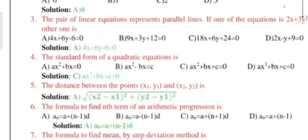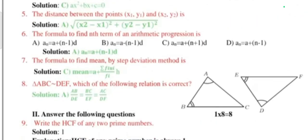Question 4: The standard form of a quadratic equation is answer C. Question 5: The distance between the points (x1, y1) and (x2, y2) is answer A. Question 6: The formula to find the nth term of arithmetic progression is answer A, an = a + (n-1)d. Question 7: The formula to find mean by step deviation method is mean = a + (Σfu / Σf) × h. Question 8: Triangle ABC is similar to triangle DEF, which of the following relation is correct? Answer is A.